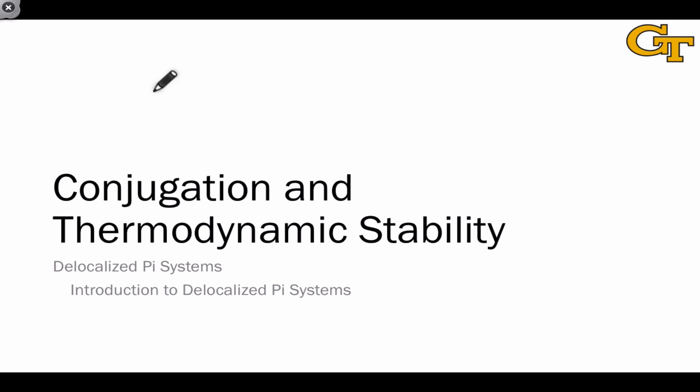Resonance delocalization is one of the five foundational stability factors of this course, so it shouldn't be a surprise that conjugated molecules, which are characterized by many alternative resonance forms, are more stable than non-conjugated isomers or comparable molecules.